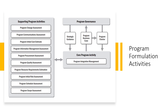Let's understand the supporting program activities as part of program formulation activities at a high level. The different activities involved in formulation include: program change assessment, program communications assessment, program initial cost estimate, program information management assessment, program procurement assessment, program quality assessment, program resource requirements estimation, program initial risk assessment, program schedule assessment, and program scope assessment. Most of these are high-level assessments and estimations. I will put out separate videos to discuss each of these activities in subsequent videos.